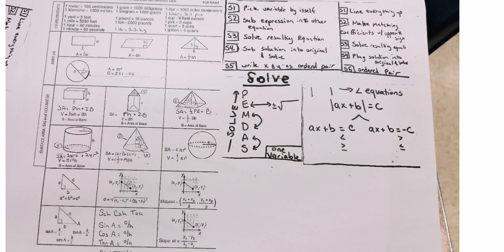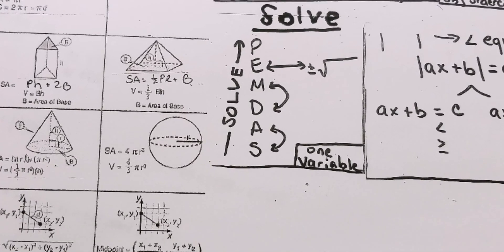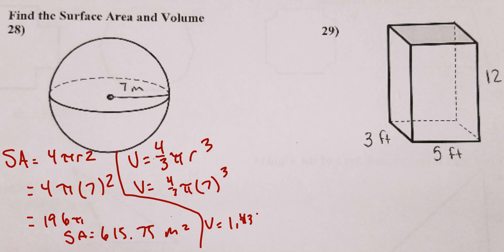The volume formula is (4/3)πr³. You can put it all into the calculator at once, or do 7³ = 343, then multiply by 4/3, then by π. Either way, volume = (4/3)π(7³) ≈ 1,436.76 cubic meters. Don't forget it's cubic meters. That's it for number 28.